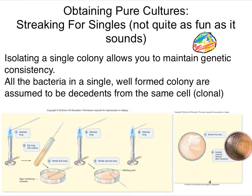There are several methods for this; the four-quadrant method is common, but some people wing it differently. The key idea is that each time you streak, you pick up only a small fraction of the cells, so eventually — usually in quadrant three or four — you've picked up only a few cells and individual cells drop off. Those individual cells grow individual colonies. Wherever you find individual colonies on the plate, you can take from them and know that culture is clonal.